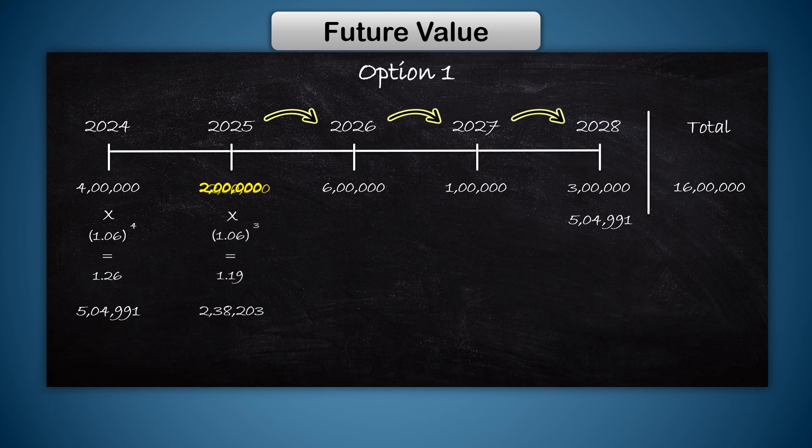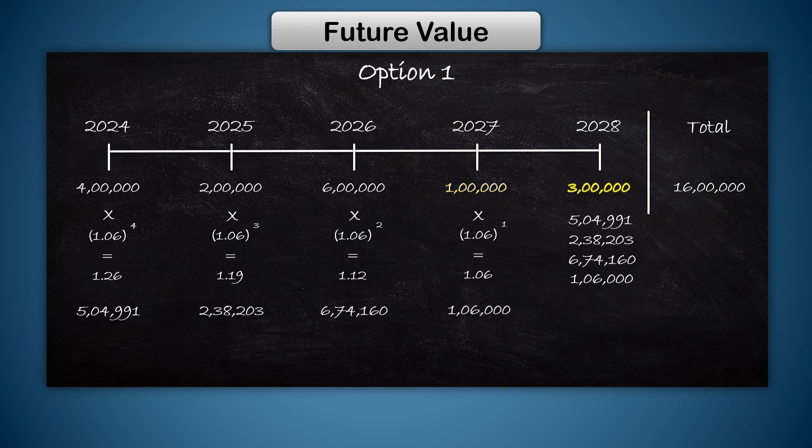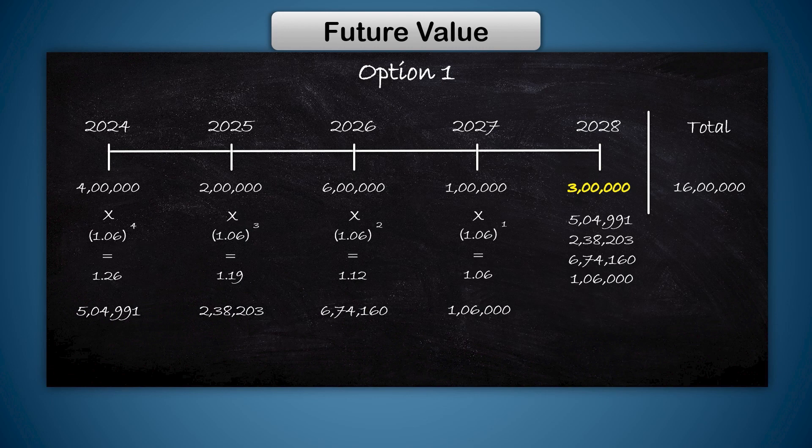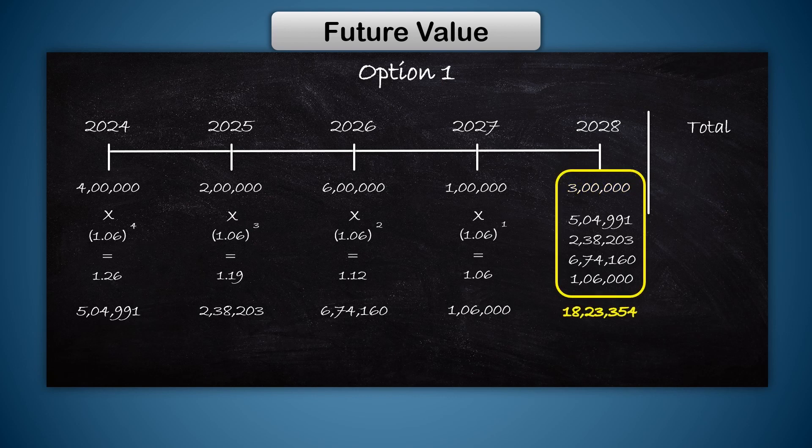This will grow for two years, this for one year. This will not grow because we are getting this amount in 2028 itself. All these amounts represent the money I will have in 2028 if I invested them the moment I got them. That total is 18 lakh 23,354. This represents the worth of all the money as on the same date in 2028.